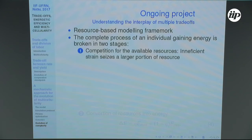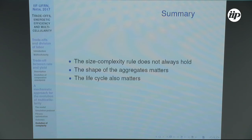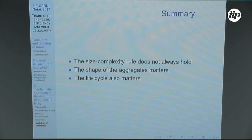In conclusion, the size-complexity rule does not always hold. It depends on the shape of the aggregates and on the life cycle. At least theoretically, we can find instances where the size-complexity rule is violated. This is something very difficult to measure in nature because measurements involve many different species in different phyla, making proper classification difficult. We believe our theoretical model can shed some light on this problem.